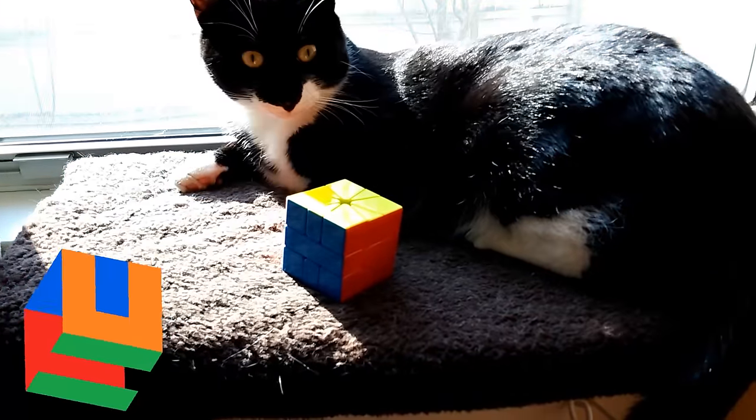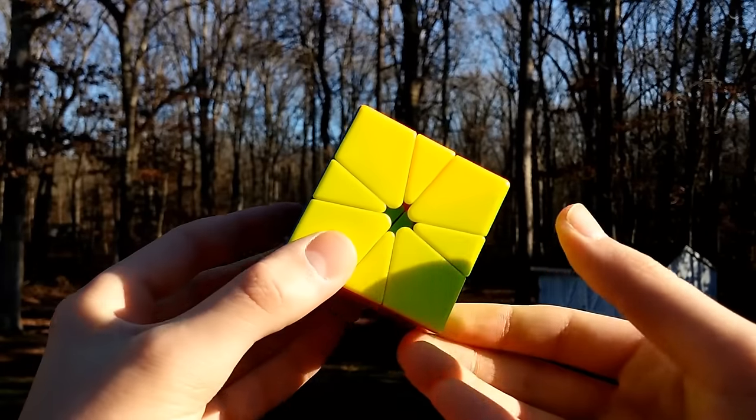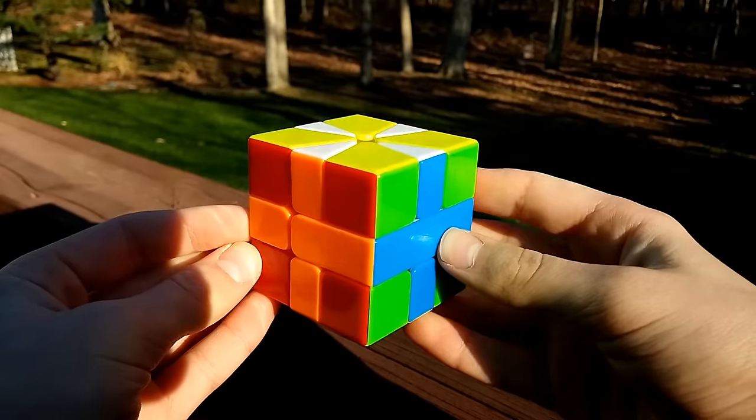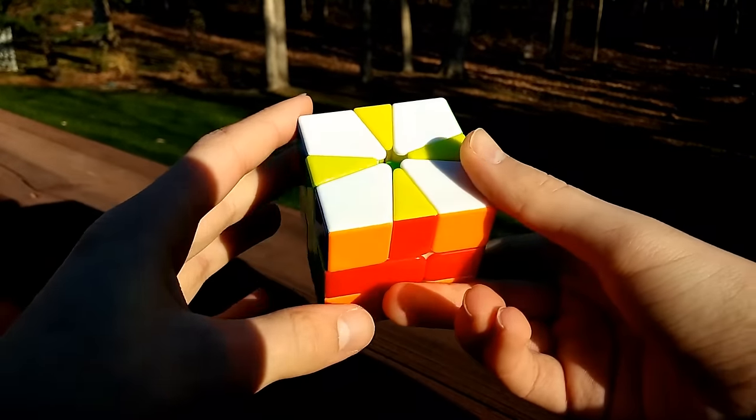The Qiyi Square One is just $12 USD at thecubicle.us, which is within $3 of all the other Square Ones on their store. It comes in black, white, and stickerless.